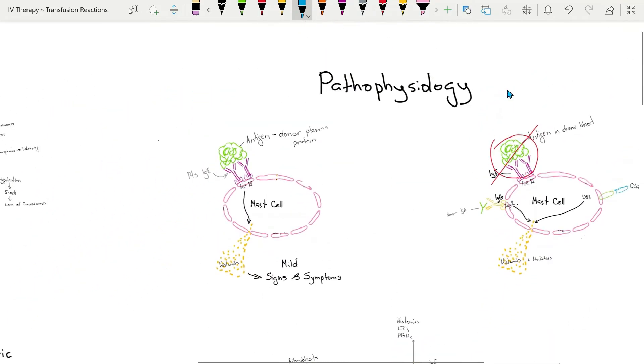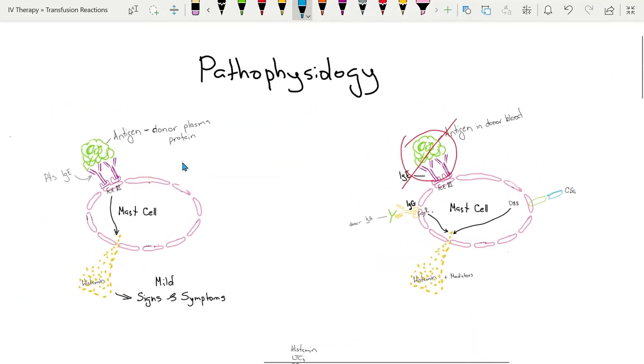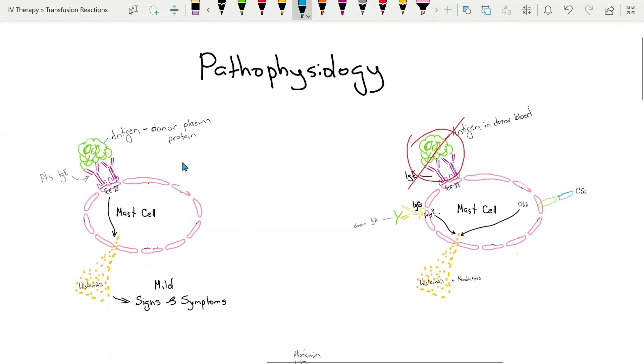The pathophysiology of allergic transfusion reactions: patients produce immunoglobulin E antibodies specific to donor plasma proteins. On the mast cell, the antigen-antibody complex bound to immunoglobulin E and antigen activate degranulation.